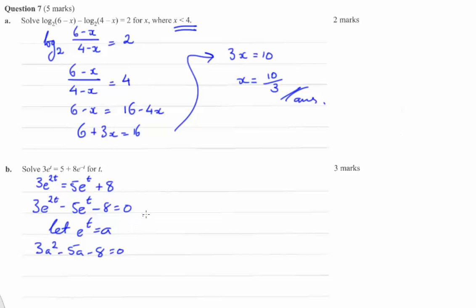So use your favourite method. Looking at this, you should figure out that you get (3a minus 8) and (a plus 1) as your brackets equals 0.